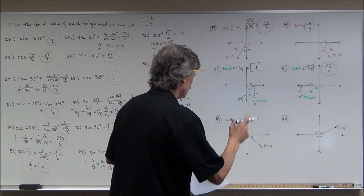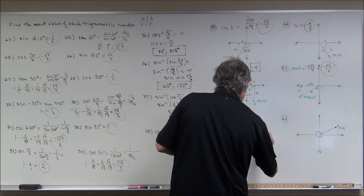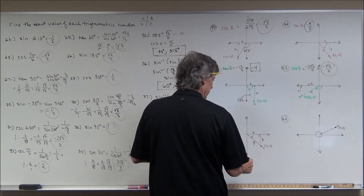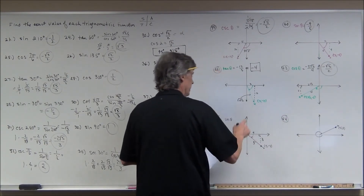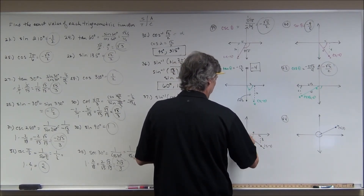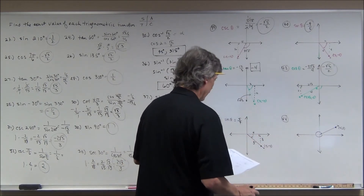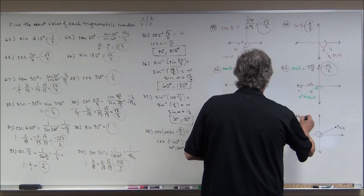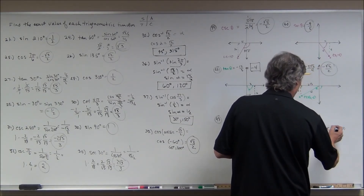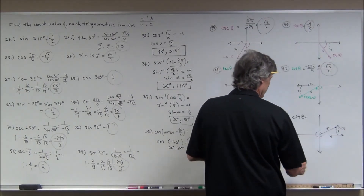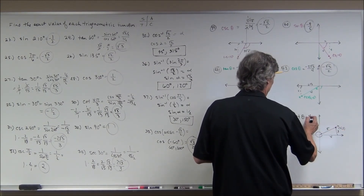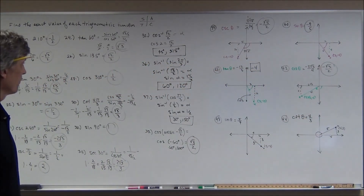For the secant problem: the legs are 4 and 3, giving a 3-4-5 right triangle. Secant is 1 over cosine. Cosine is adjacent over hypotenuse, so secant is hypotenuse over adjacent: 5 over positive 4. For the cotangent problem: cotangent is the reciprocal of tangent. Since tangent is opposite over adjacent — 3 over 4 — cotangent is 4 thirds.